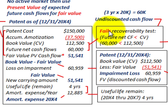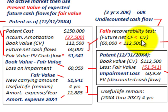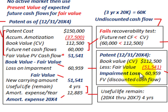Now let's look at our testing. For the recoverability test: the undiscounted future net cash flows are $60,000, which is less than the carrying value of $112,500. So we've failed the recoverability test. Next, we calculate our impairment loss as of 12/31/20X4 — the end of the 20X4 year.